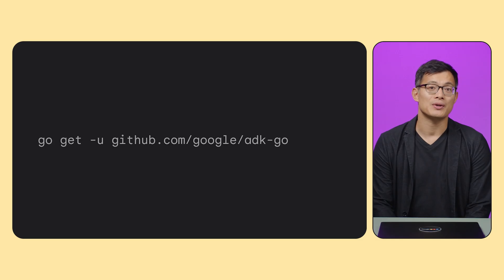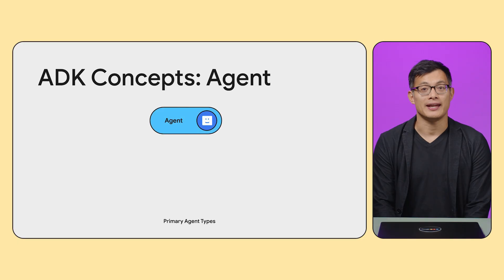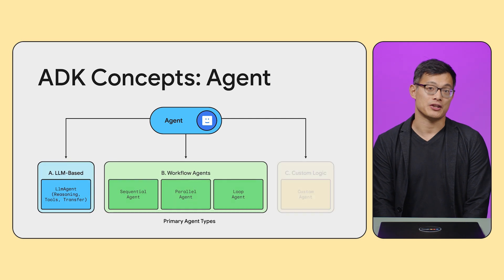The first step, as with any library, is including ADK in your project. Since we're using Go, it's as simple as running a Go get command. Now, before we look at the code, let's discuss the notion of agent. In ADK, there are three main categories of agents.